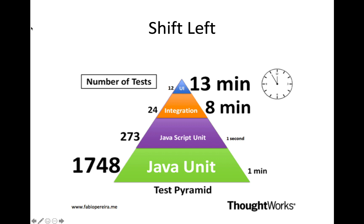Most traditional organizations I've worked with, their automated testing does not look like this today. It's that inverted ice cream cone anti-pattern. You've got a lot of companies and traditional software development leaders that have invested so much of their time and effort in building out UI-level testing that is really slow, really brittle and fragile, non-deterministic, and ultimately not actually providing value. This is an area where it takes a lot of work and a lot of convincing to get those traditional software leaders to start investing in a better test automation pattern.